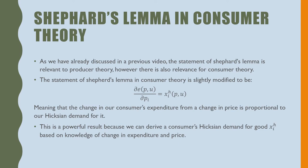The statement of Shepard's Lemma in Consumer Theory has to be slightly modified to be: the partial derivative of our expenditure function with respect to the price of good i is equal to the Hicksian demand of good i, meaning that the change in our consumer's expenditure from a change in price of good i is proportional to the Hicksian demand for it. This is a powerful result because we can derive the consumer's Hicksian demands for good x_i based on knowledge of change in expenditure and price.